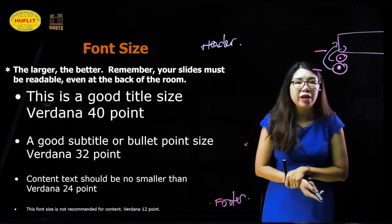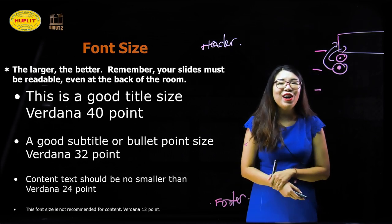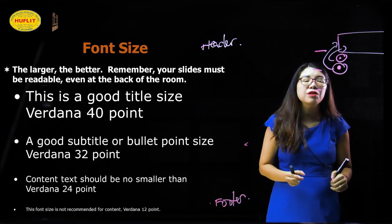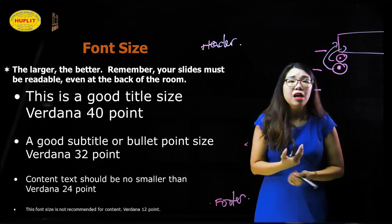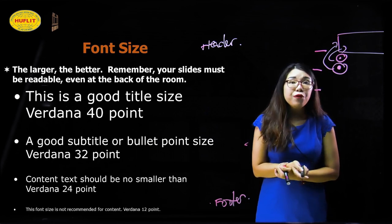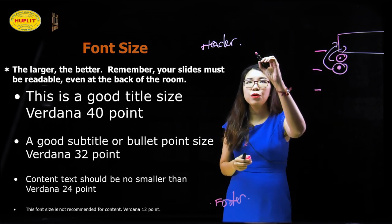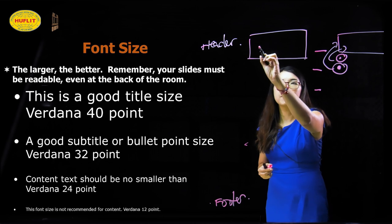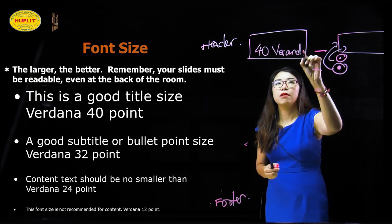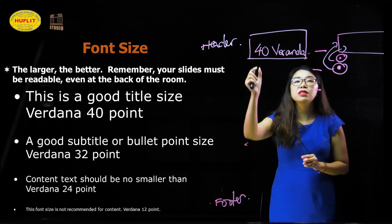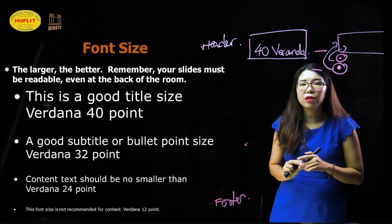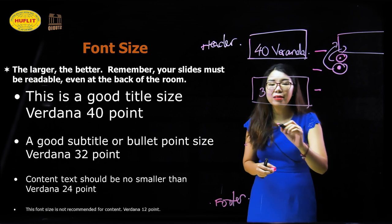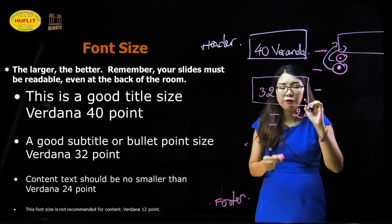For font size, the larger the better — meaning the audience can see it more clearly. Here are the recommended sizes: the title at the top of the slide should be font size 40. The subtitle or bullet points should be 32. The main content should be 24. If you use a header or footer, use font size 12.